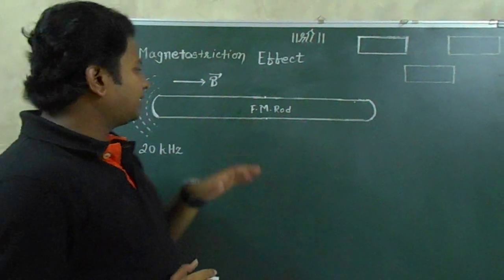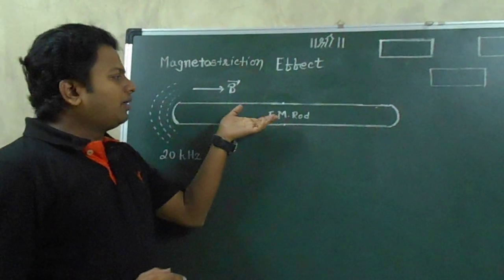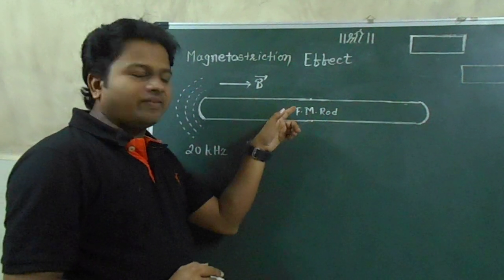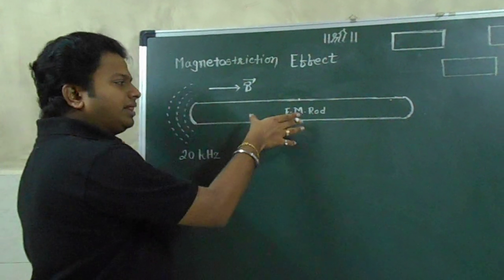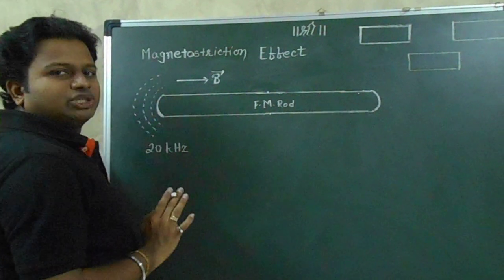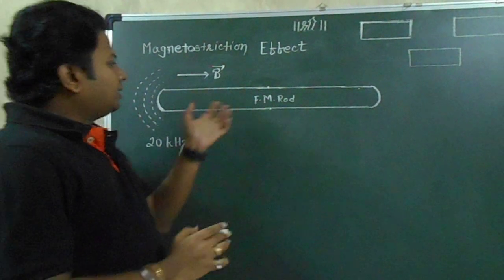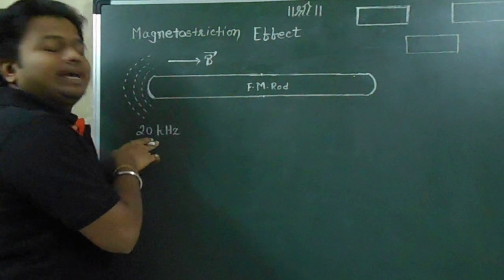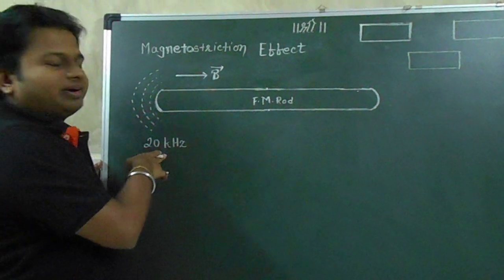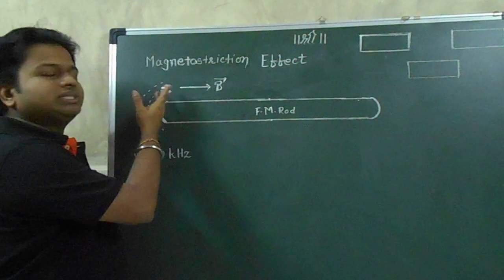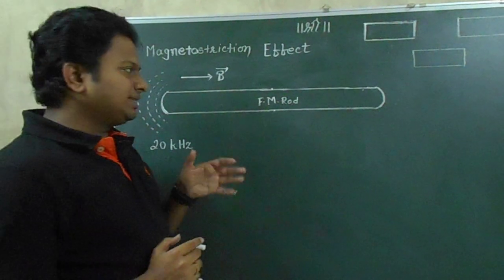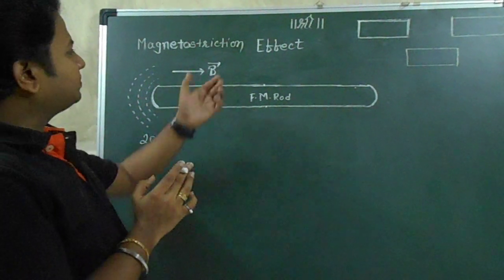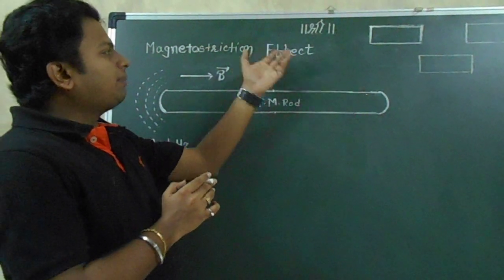So what is the Magnetostriction Effect? Whenever a ferromagnetic rod is subjected to the action of an external magnetic field such that the length of the rod is parallel to the direction of B, then the rod will start vibrating along the x-axis. If the frequency of vibration exceeds 20 kHz, the surrounding air molecules will also vibrate with the same frequency, and as a result, ultrasonic waves are generated in the surrounding region. This effect is known as the Magnetostriction Effect.